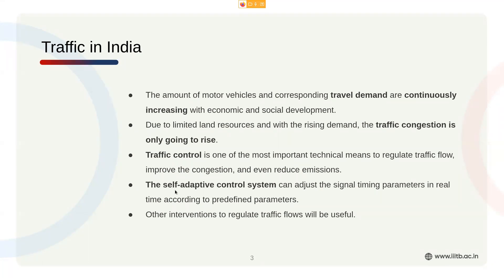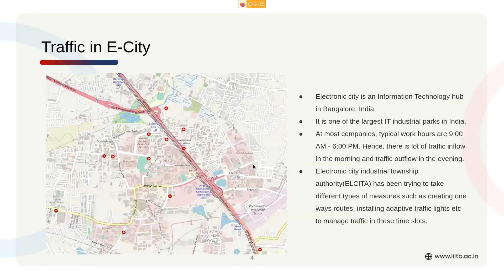We're going to look at a self-adaptive control system and some metrics which show how useful certain things are. This is the specific portion of Bangalore we are focusing on — Electronic City, the technology hub in Bangalore. The pink road you can see here is the nine-kilometer-long flyover, which is also a national highway.